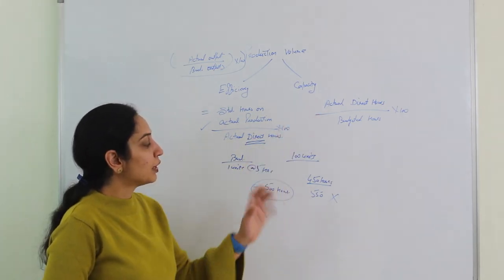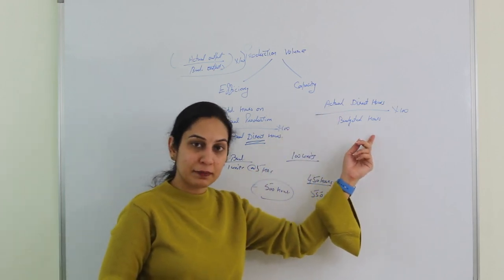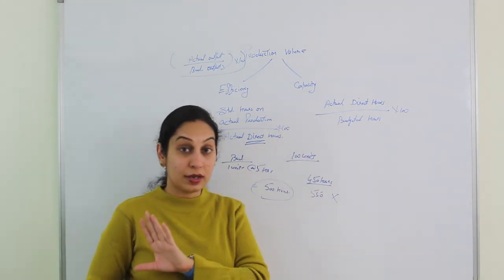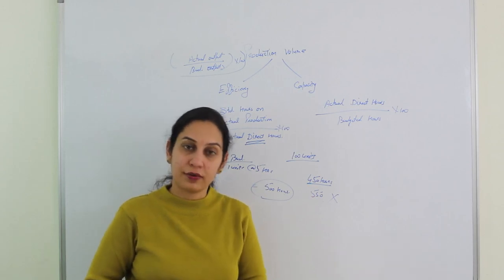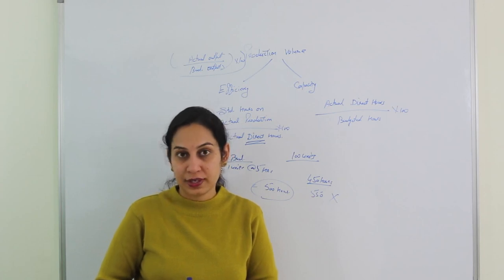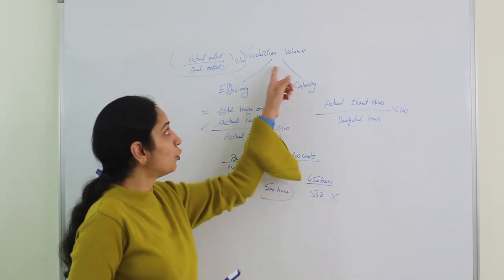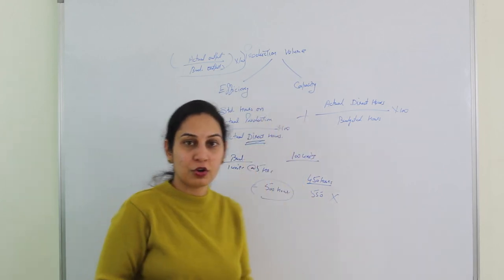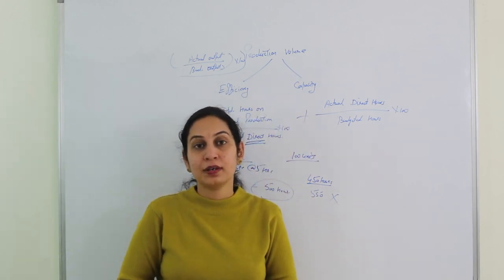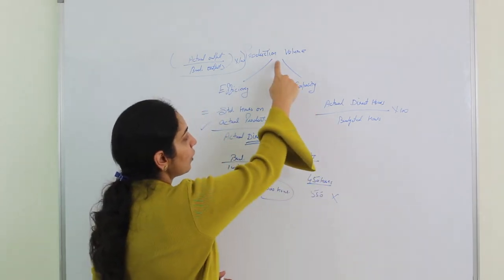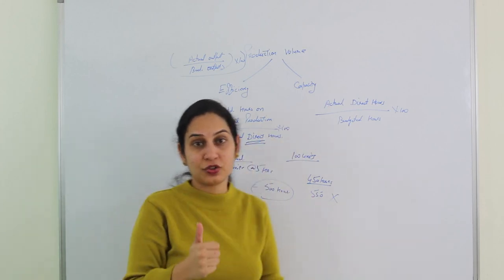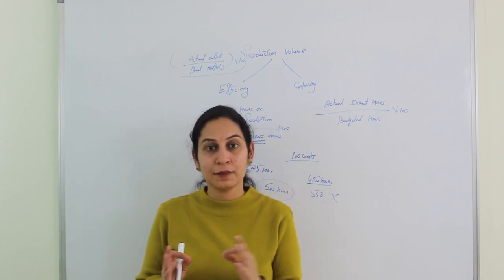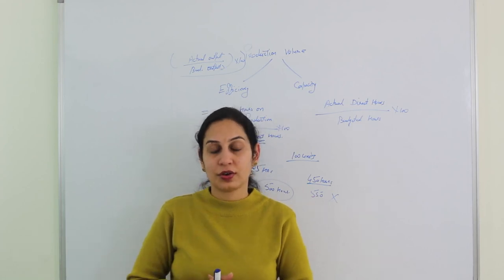The capacity ratio formula is: actual direct hours divided by budgeted hours, multiplied by 100. Again, only direct hours are used. An important exam tip: production volume ratio equals efficiency ratio plus capacity ratio. If all three ratios are given and they do not match this relationship, one of them is incorrect. Use this as a check in the examination.